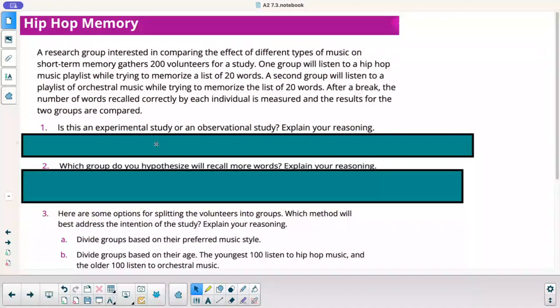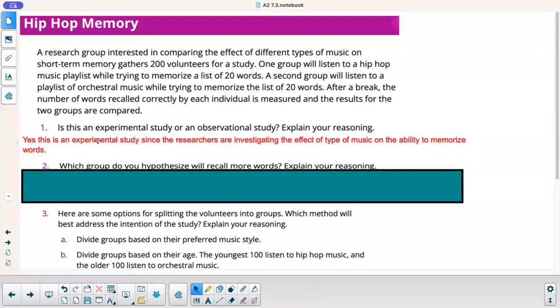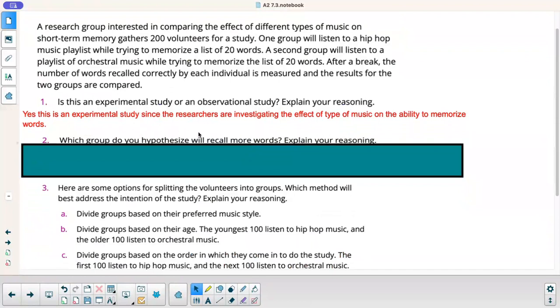Next thing, a research group interested in comparing the effect of different types of music on short-term memory gathers 200 volunteers for a study. One group will listen to a hip-hop music playlist while trying to memorize a list of 20 words. A second group will listen to a playlist of orchestral music while trying to memorize the list of 20 words. After a break, the number of words recalled correctly by each individual is measured and the results for the two groups are compared. Is this an experimental study or an observational study? Explain your reasoning. This is an experimental study since the researchers are investigating the effect of type of music on the ability to memorize words. They're actually doing the experiment. They're not just observing.